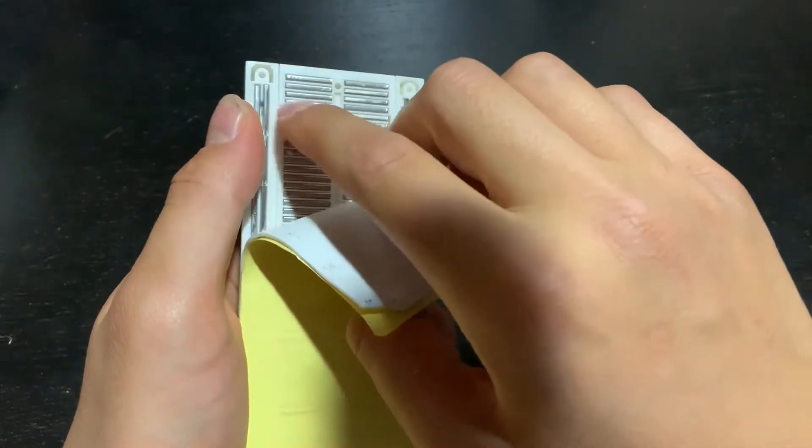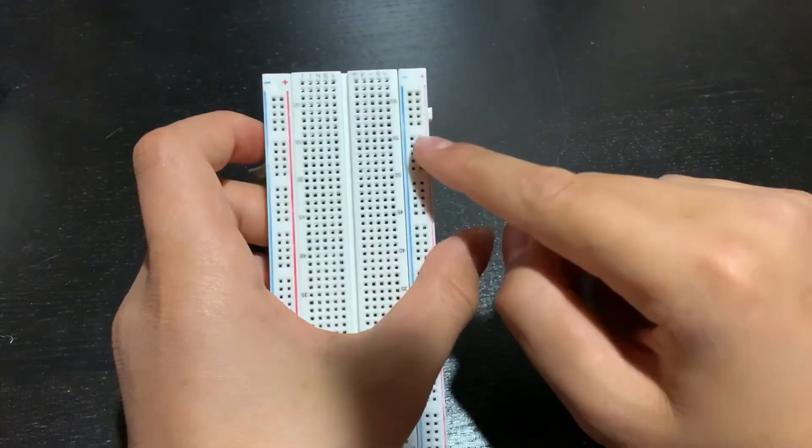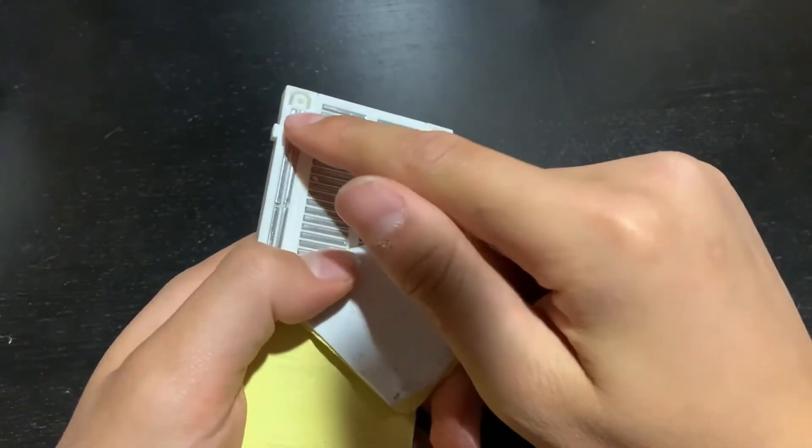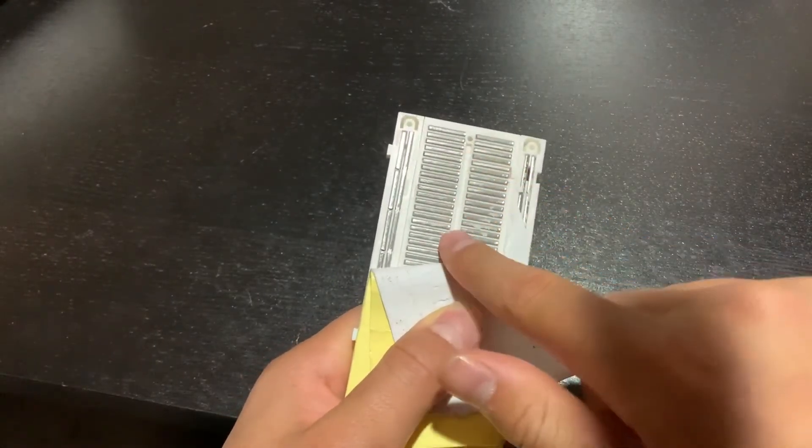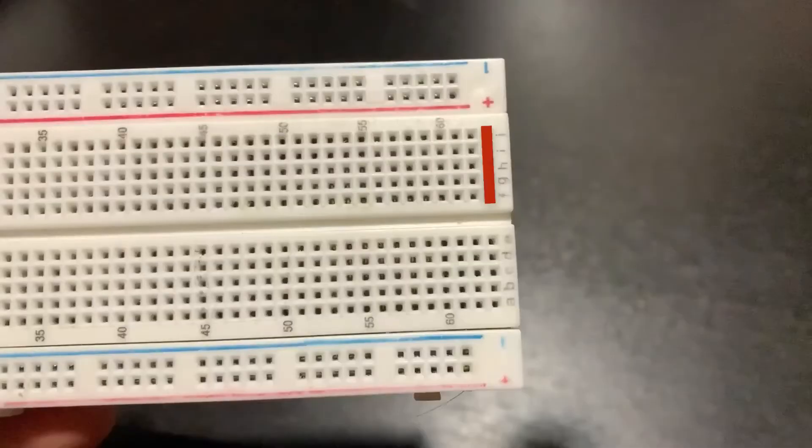As you can see, the rails in the center run horizontal, and the rails on the outside run vertical. However, since it's split down the middle, these two rails won't connect.